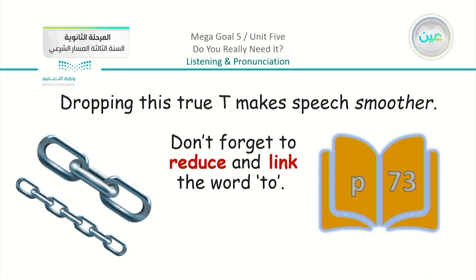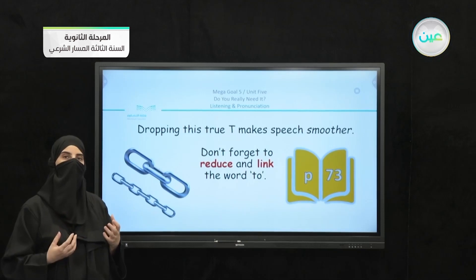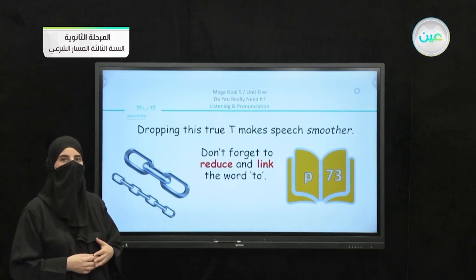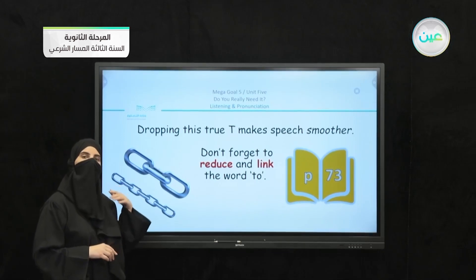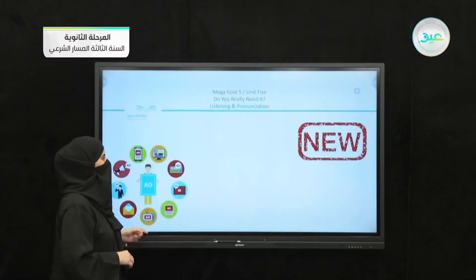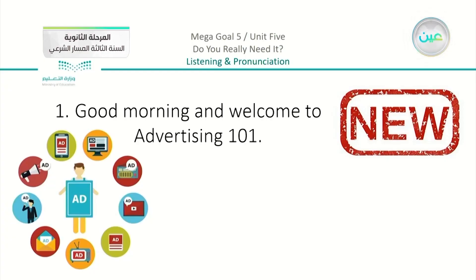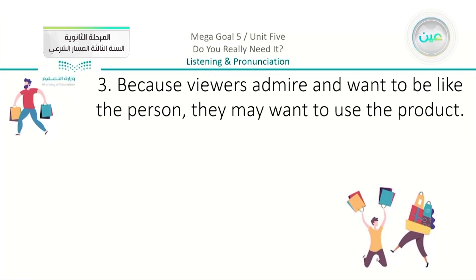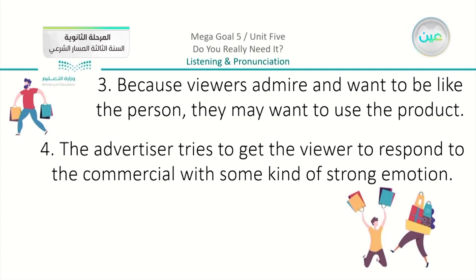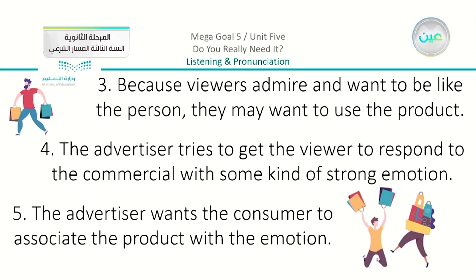Now we are going to apply the exercises on page 73. Someone has applied these sentences and you are going to listen to how she pronounced them. Have your book open on page 73 and listen to how the speaker pronounces 'to.' Listen: 'Good morning and welcome to Advertising 101. You are here today because you want to learn the secrets behind how advertisers sell to consumers. Because viewers admire and want to be like the person, they may want to use the product. The advertiser tries to get the viewer to respond to the commercial with some kind of strong emotion. The advertiser wants the consumer to associate the product with the emotion.'